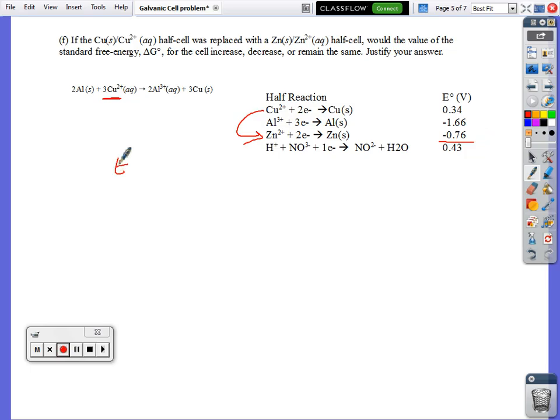We use the same method we used before. E for the cell equals E for oxidation plus E for reduction. Except we have a different reduction here. The aluminum part's the same, 1.66. But now we're adding it to zinc. Zinc has a negative value for reduction, negative 0.76. If we add those together, that gives us 0.90 volts.